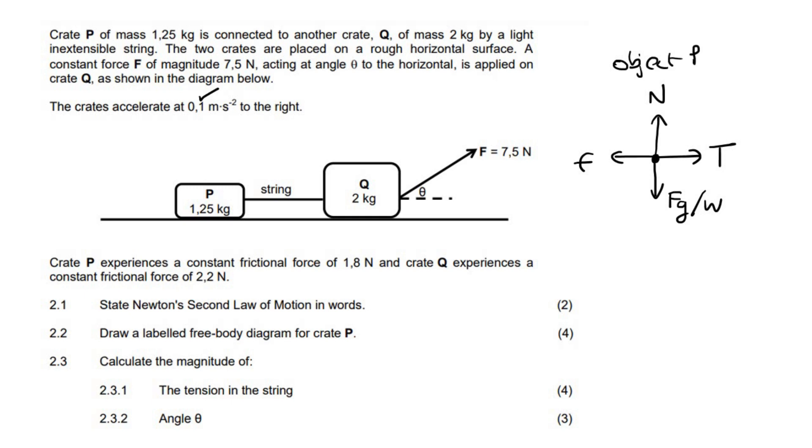You could say F net equals MA, and then we choose right as positive. Then you would have this one minus this one, so your tension minus your friction, and equals to MA.